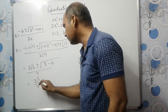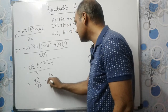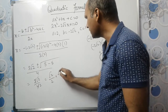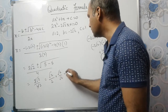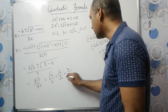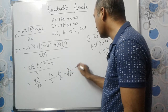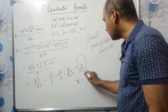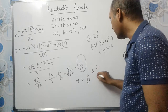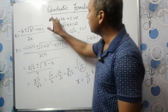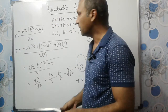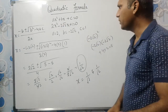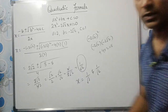So we have 2 root 2 divided by 4, which simplifies to root 2 divided by 2. If you rationalize by multiplying by root 2 over root 2, you get root 2 times root 2 divided by 2 root 2, which gives 1 by root 2. So x equals 1 by root 2 and 1 by root 2 — two equal roots.